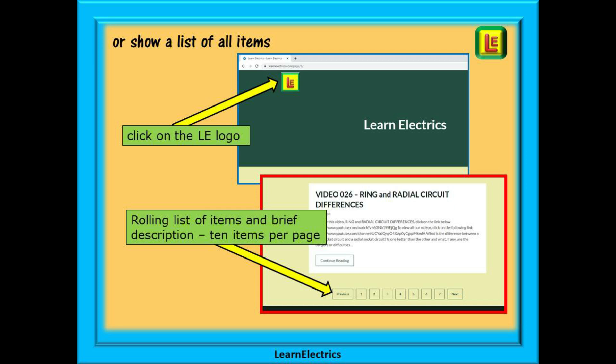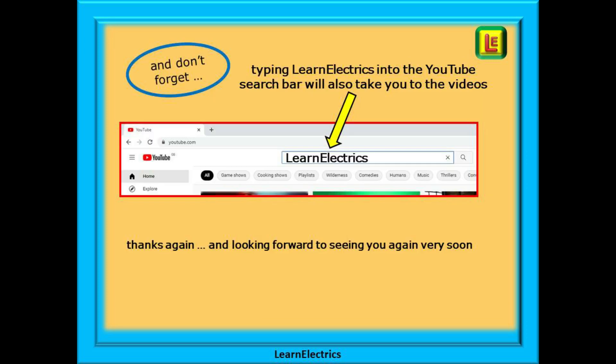Or you can browse through a list of all the available items and videos. To do this, click on the LE logo on the top left of the home page and all of our items and videos will be shown. There will be 10 items shown on each page and at the bottom of each page is a page selector: page 2, page 3, page 4, etc. That will bring up the next 10 items or videos in the list. And don't forget that you can also type in LearnElectrics, all one word, into the YouTube search bar to go directly to our channel at any time from any computer. We are constantly adding new videos to our channel. Don't miss the next one. And once again, thanks for watching and we hope to see you again very soon.